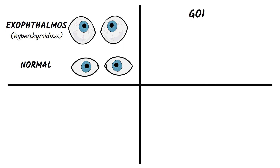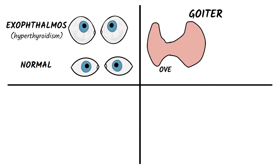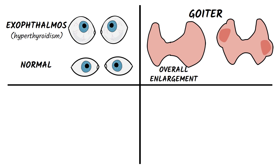Having a goiter, which may be caused by an overall enlargement of the thyroid or by lumps formation in the gland. It may be associated with no change in thyroid function or with an increase or decrease in thyroid hormones.